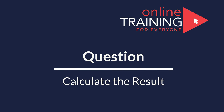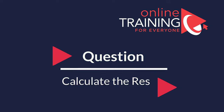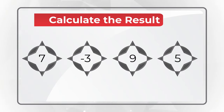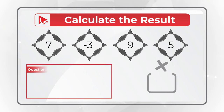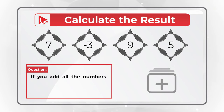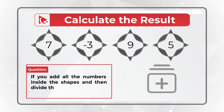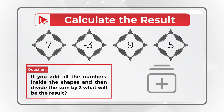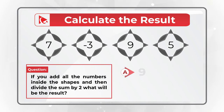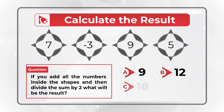Here's an amazing question to test your business math skills. You're presented with a set of numbers in a compass-like figure, and you need to add up all the numbers inside the shapes, then divide the sum by 2. You have 4 different choices: Choice A: 9, Choice B: 12, Choice C: 18, and Choice D: 24.